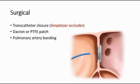For surgical treatment, we can do transcatheter closure using the Amplatzer occluder. The main aim of treatment is to close the hole in the septum to prevent blood flowing from the left ventricle to the right ventricle. Another option is to use a Dacron or PTFE patch to patch the hole and block the blood flow. Pulmonary artery banding can also be done to reduce pulmonary hypertension.